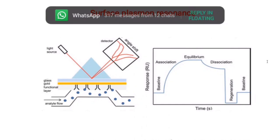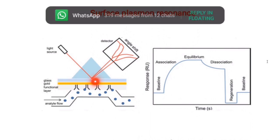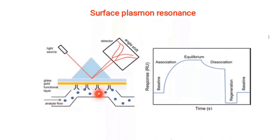In SPR, just as an illustrative example — I will talk more on this — what you can see is that there is a glass plate and there is one prism over it, and in yellow you can see a gold plate. On the gold plate you can see Y-shaped ligands which are immobilized and attached to the gold surface, such as an antibody. And then you can see these blue dots which are analytes flowing over this ligand.